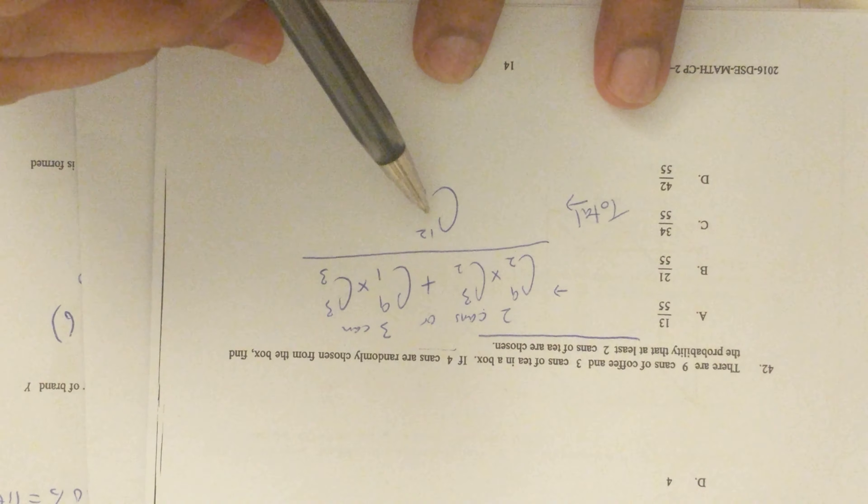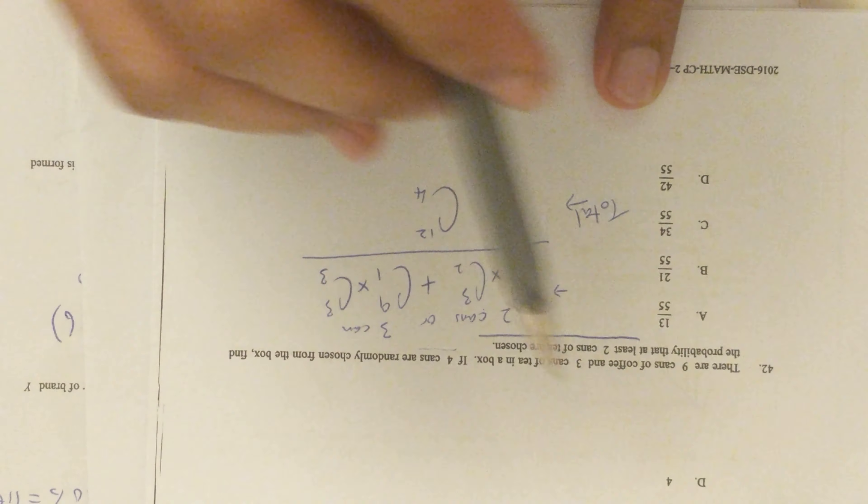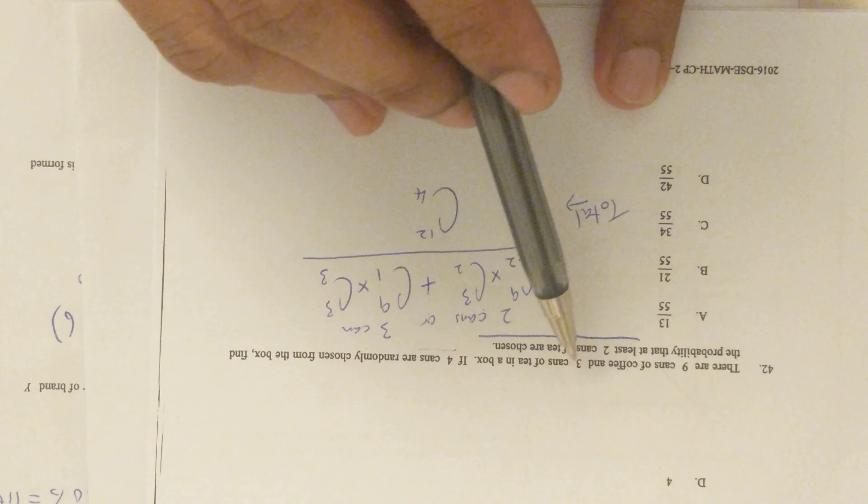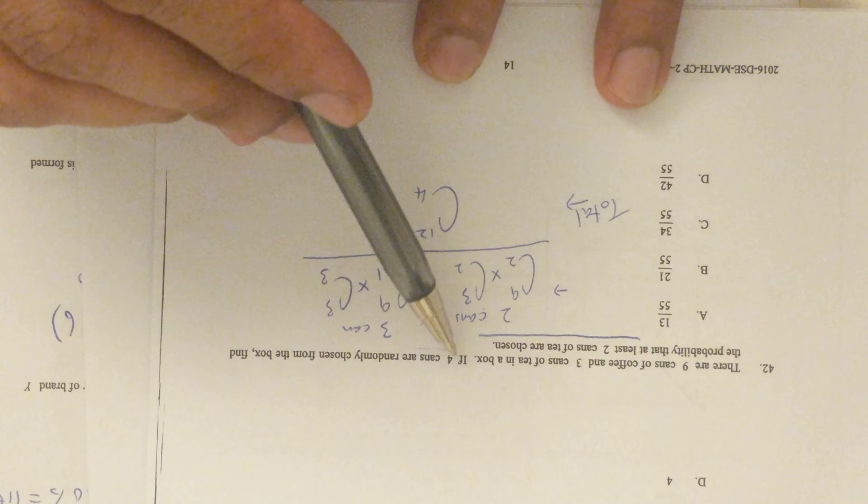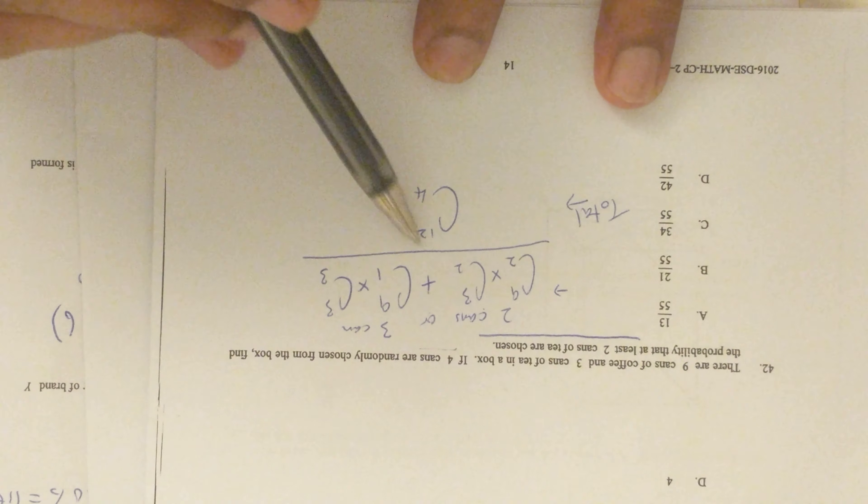When you add that, you will divide the whole thing after you plus them by the total condition. We have twelve cans altogether and we're going to choose any four out of the twelve to be our denominator.